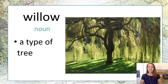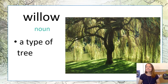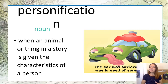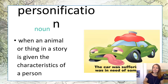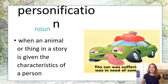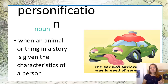Willow is a type of tree. Our next word is personification — this is when an animal or thing in a story is given the characteristics of people. For example, 'the car was suffering and was in need of some TLC.' We know this is personification because cars don't have faces or eyes, and a car wouldn't get a hot compress on its head — but that is making it have traits of a person.